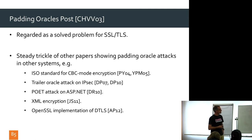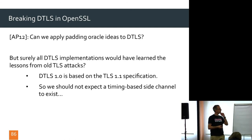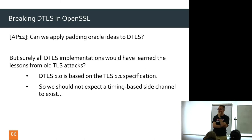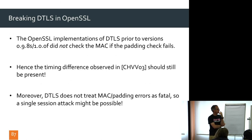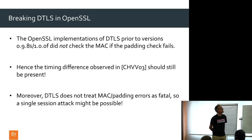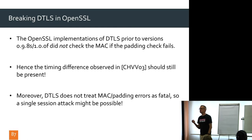Our question was: can we apply the padding oracle attack to DTLS? You'd think everything is patched. But we found that even though DTLS 1.0 is based on the TLS 1.0 spec and should have countermeasures, the OpenSSL implementation of DTLS did not check the MAC if the padding check fails. They had not implemented the countermeasure, so the timing difference from the 2003 paper should still be present.